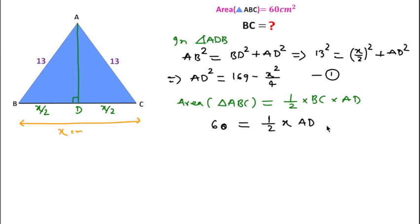We can write AD equals 120 over x, because 60 times 2 becomes 120 and x goes to division.